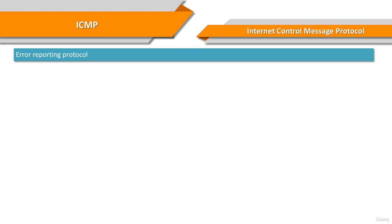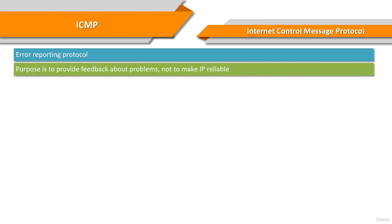The Internet Protocol is not designed to be absolutely reliable. The purpose of these control messages is to provide feedback about problems in the communication environment, not to make IP reliable.